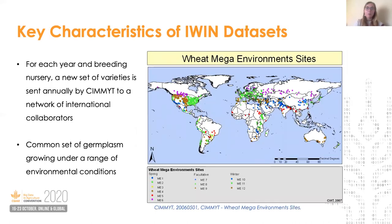Within the IWIN, there are around 700 testing locations, each assigned to a different mega environment, which dictates which types of nurseries the location will receive. There is generally somewhat limited overlap from year to year in terms of the germplasm tested, because each year represents a new set of breeding material. However, within a year, the same set of germplasm is sown at a large number of locations.